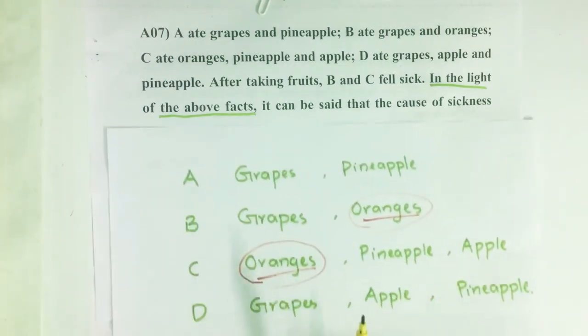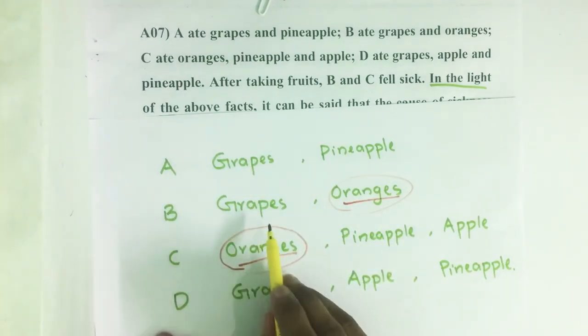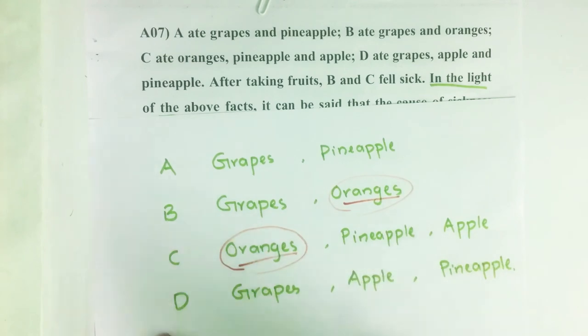So here it is given that A ate grapes and pineapple, B ate grapes and oranges, C ate oranges, pineapple, apple, D ate grapes, apple and pineapple.